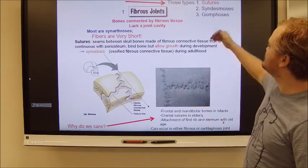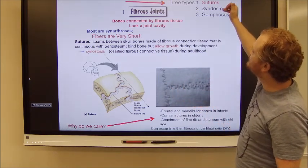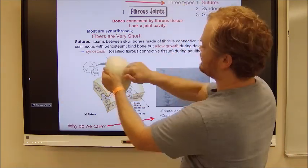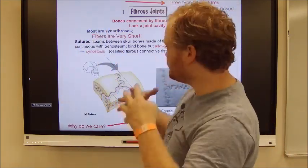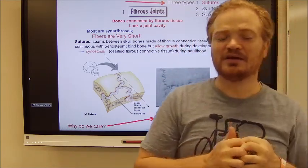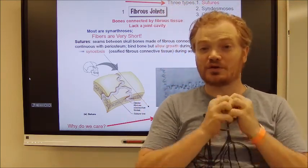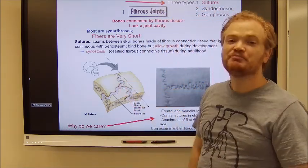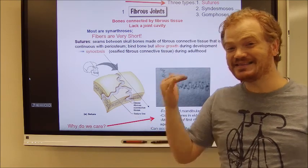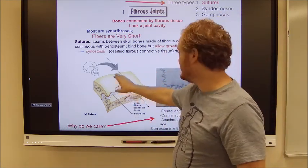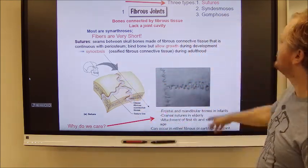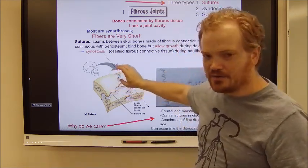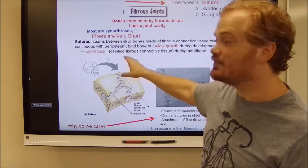There are three types of fibrous joints: sutures, syndesmoses, and gomphoses. This is a suture — sutures are the connection points in the skull where the skull bones grow together and attach to one another using incredibly short fibers. This results in a joint which is still fibrous, but it is synarthrotic — it is non-moving, it does not move at all. So sutures are where you have very short fibers connecting bones together and those joints are non-moving, synarthrotic.